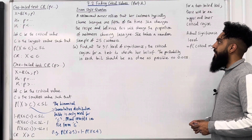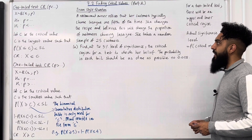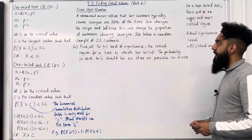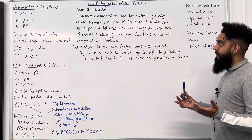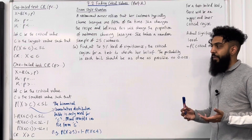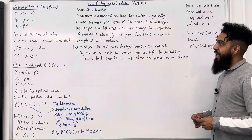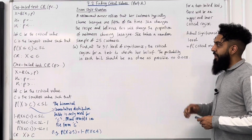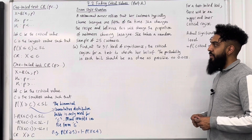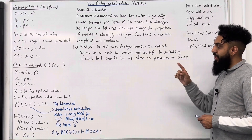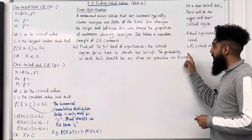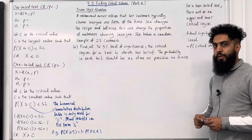A restaurant owner notices that her customers typically choose lasagna one-fifth of the time. She changes the recipe and believes this will change the proportion of customers choosing lasagna. She takes a random sample of 25 customers. Part A: find at the 5% level of significance the critical region for a test to check her belief. The probability in each tail should be as close as possible to 0.025.